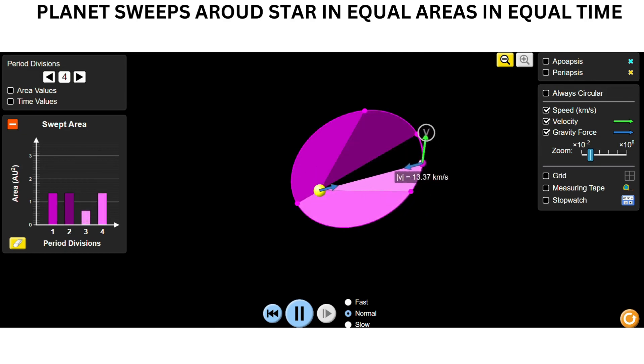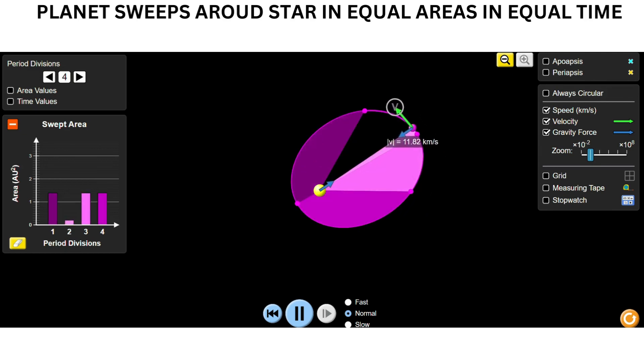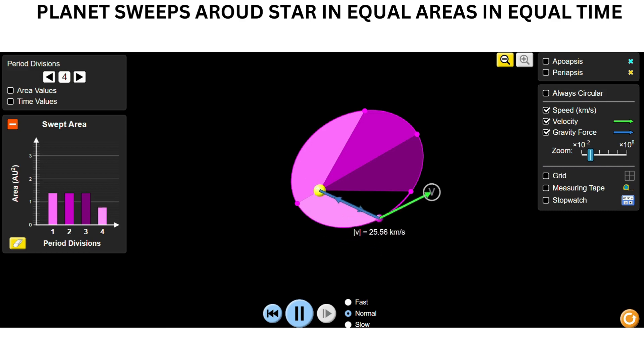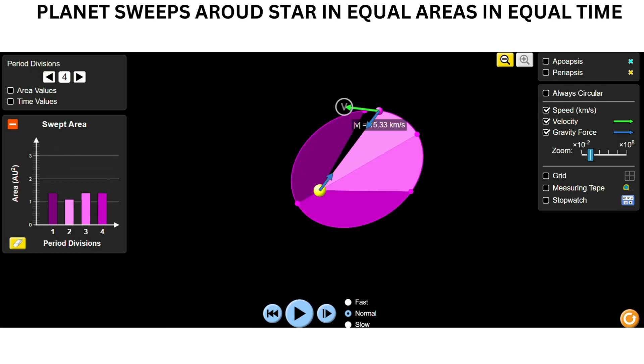So, Kepler's second law says the planets orbit around the star in equal areas and in equal time. Thank you.